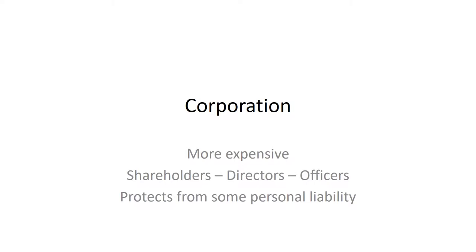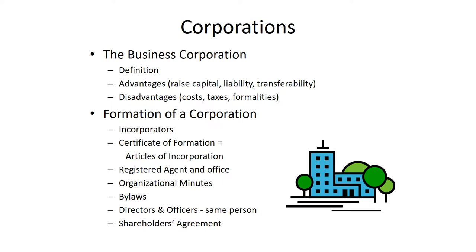The downside of the corporation is it has a more complicated structure involving shareholders, directors, and officers. In a small business, there may be one shareholder, and that one shareholder may also be the director and also the president or officer of the company. But that person wears three different hats at different times and needs to document decision-making for the corporation appropriately for when they're wearing each of those three hats.